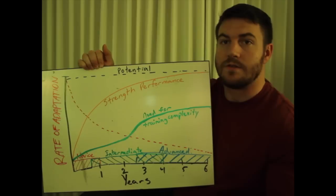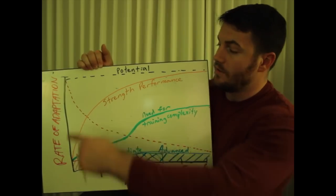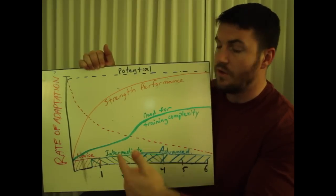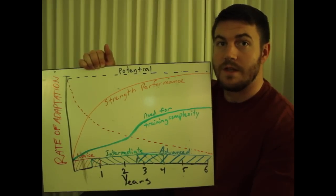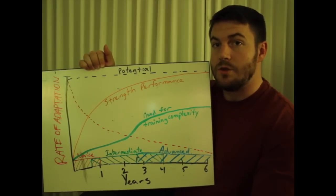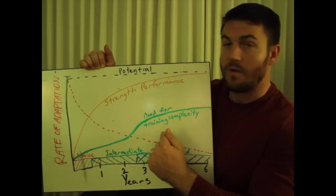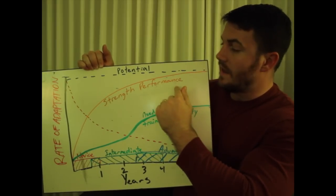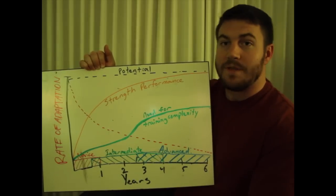What training complexity is, is changing the stressors or the way those stressors that you are adapting to, changing the way that those are experienced in your body. What this means is you have to have more complex training to drive strength gains when your rate of adaptation is low.